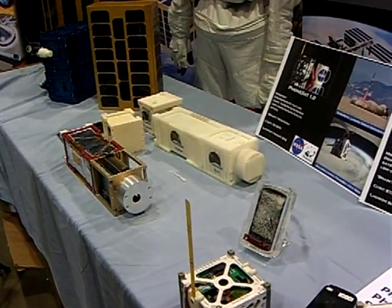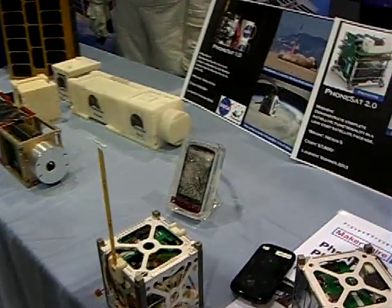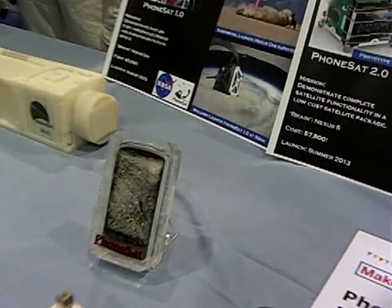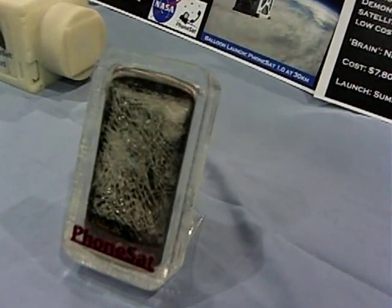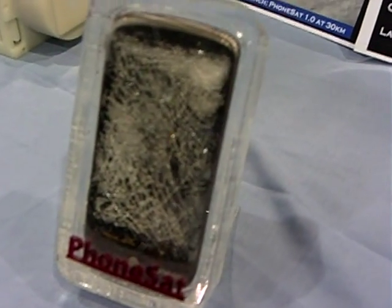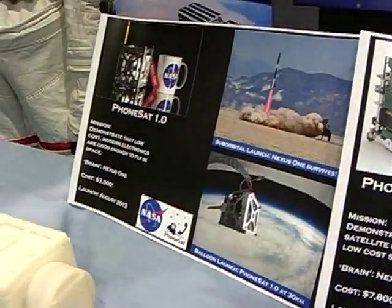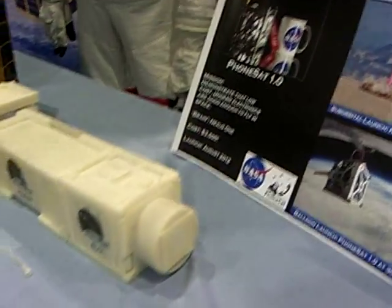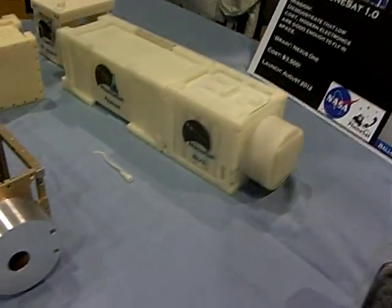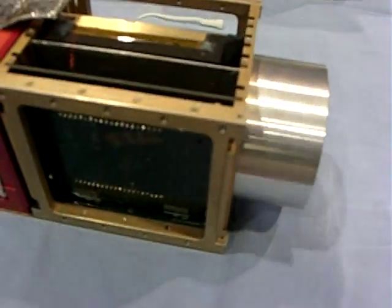And then you have the packets, because we are going to take pictures there, put the pictures in a small package and send it back to Earth. And then the ground station on Earth will take the packets, decode the packets, and make the image back.